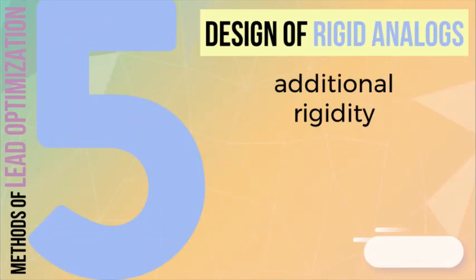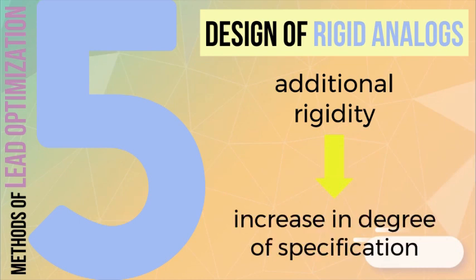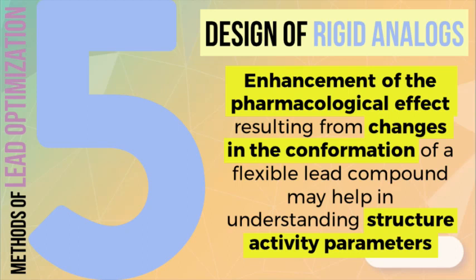Increasing molecular rigidity — for example, by incorporating a flexible molecule into a ring system or by adding double or triple bonds — increases the specificity of the pharmacologic effect of the lead compound. By using this strategy, the 3D geometry of the pharmacophore as well as the structure-activity parameters may be determined and defined.